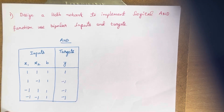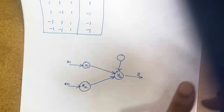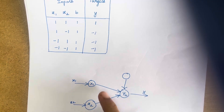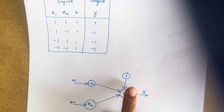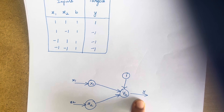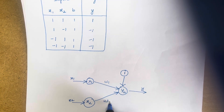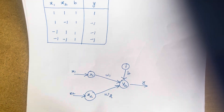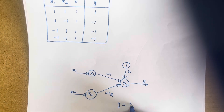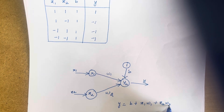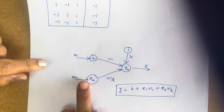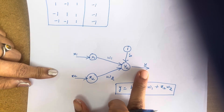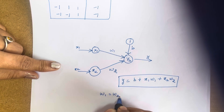The bias is considered as 1 for all inputs. After writing this truth table, we need to design the network. Since we have two inputs X1 and X2, we have two neurons X1 and X2 and one bias with input 1. The output neuron is Y. The weights are W1 and W2, and B is the bias. We initialize W1, W2, and B to 0.